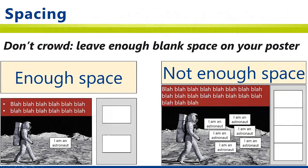One of the most common design mistakes on posters is when people don't leave enough space between all the items on their poster, making it look crowded and more difficult to read. When printed, it's ideal to have at least a quarter inch of space between almost everything on your poster. Even if you don't make any other adjustments, just fixing the spacing on your poster can make it look two times more professional instantly. It can also help you make sure that you've included just enough information instead of too much.